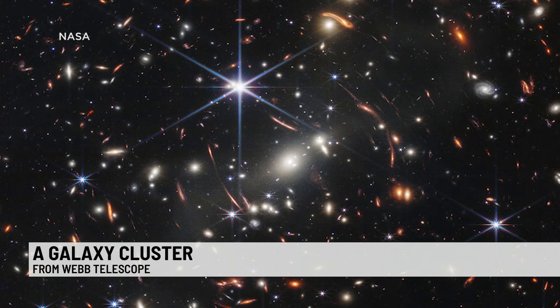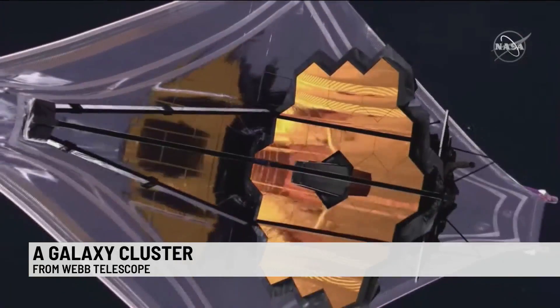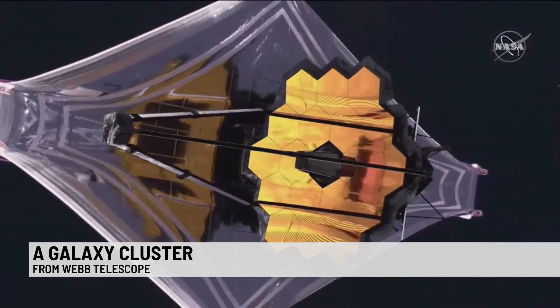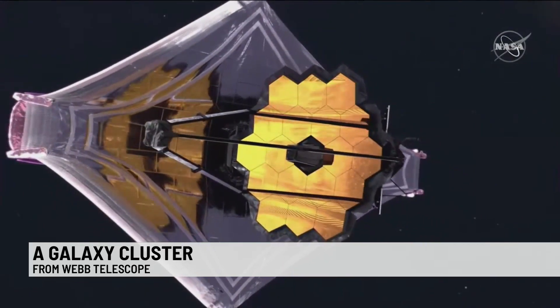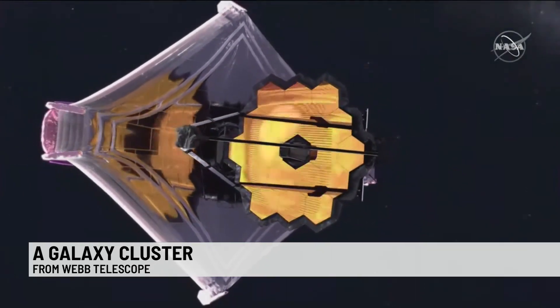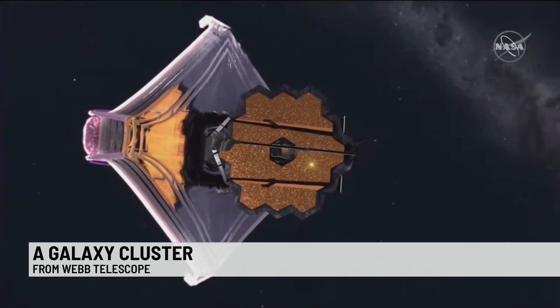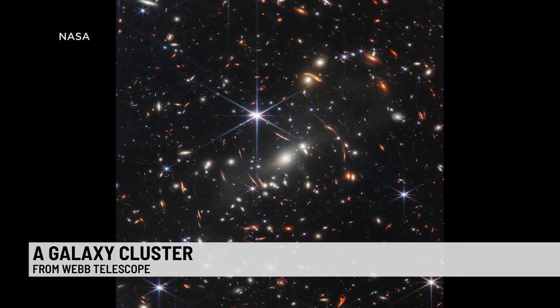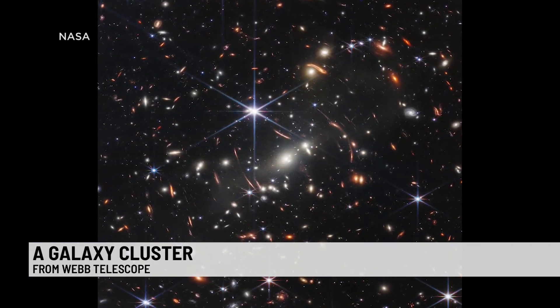This photo shows an area of outer space humans have never seen before. The image shows a galaxy cluster as it appeared 4.6 billion years ago. It's a composite made from images of different wavelengths over 12 and a half hours.